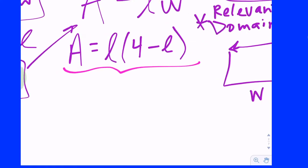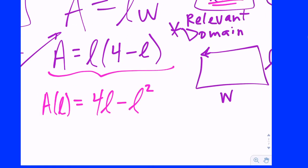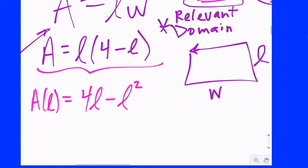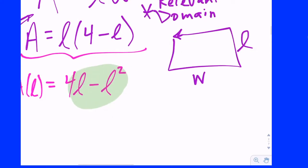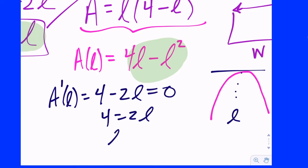So A equals L times (four minus L). We need to find the critical values of that. Do you want to use the product rule, or distribute and then use the power rule? I would probably distribute because it's going to be easier. Writing A(L) shows it's a function of L. Notice that's going to give you a graph of a quadratic, and because the coefficient in front is negative, it's a parabola that opens down. That is very important in terms of justifying, because you know then that the vertex is not only going to be a local maximum location but an absolute maximum location. Taking the derivative, we get four minus 2L. We set it equal to zero and get four equals 2L, so L equals two.